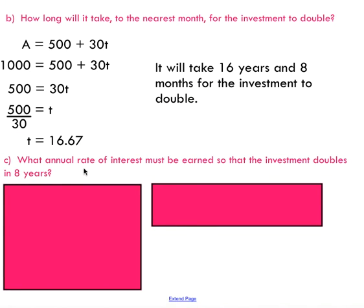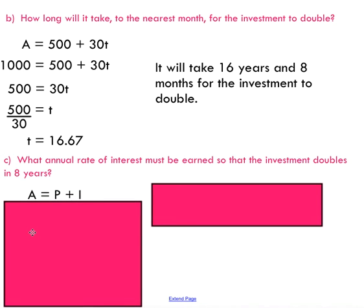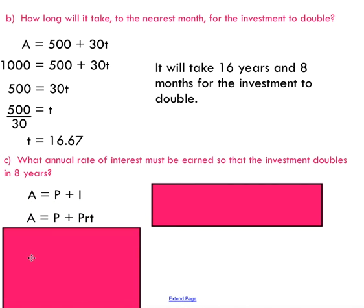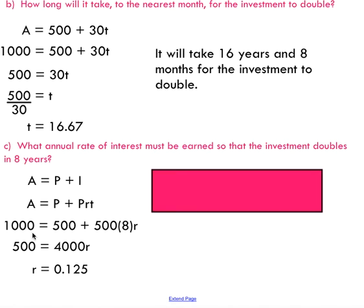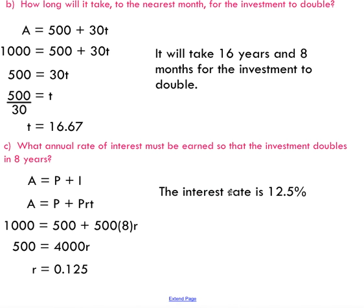Follow-up question C asks: what annual rate of interest must be earned so that the investment doubles in 8 years? Our goal is to solve for R. Our linear model doesn't contain R, so we backtrack to A = P + I and rewrite it as A = P + PRT, since I = PRT. Substituting the doubled investment of $1,000, the initial investment of $500, and a time of 8 years, we rearrange algebraically to solve for R. Remember that R will be expressed as a decimal, so it's good practice to convert it to a percentage for communication purposes.